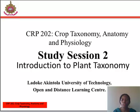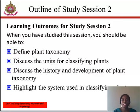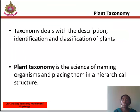Some orders and categories are added all the time. At the end of the study section you should be able to: one, define plant taxonomy; two, discuss the units for classifying plants; three, discuss the history and development of plant taxonomy; and four, analyze the intent used in classifying plants.